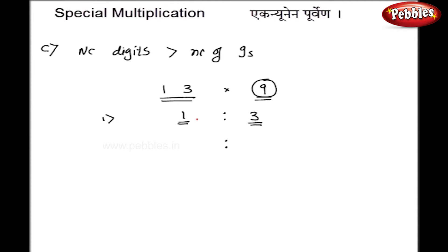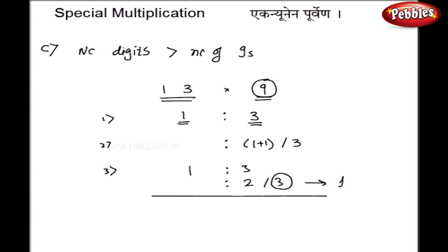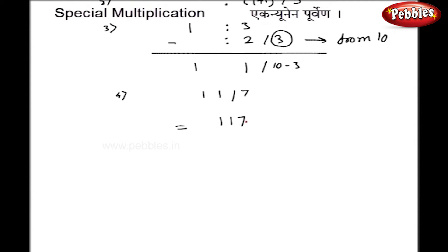Next, add 1 to the left hand side, so 1 plus 1 gives 2, and 3 stays as it is. So we now have 2 and 3. Now pay attention: on the right hand side of the answer, we subtract from 10. So 10 minus 3 gives 7, and the rest is traditional subtraction: 3 minus 2 is 1, and 1 stays as it is. So my final answer is 117.